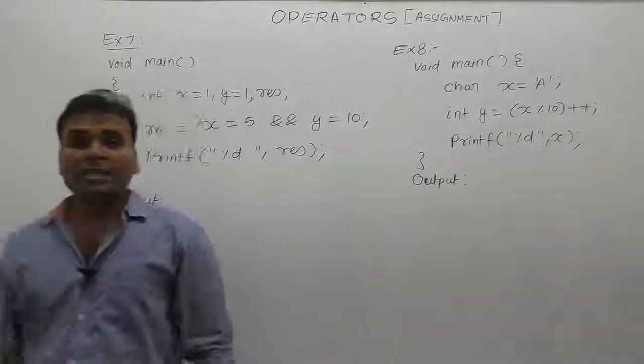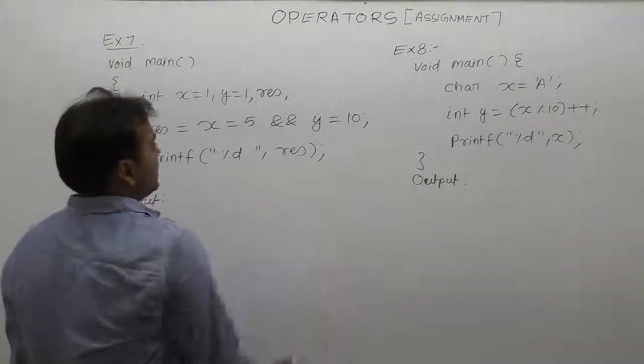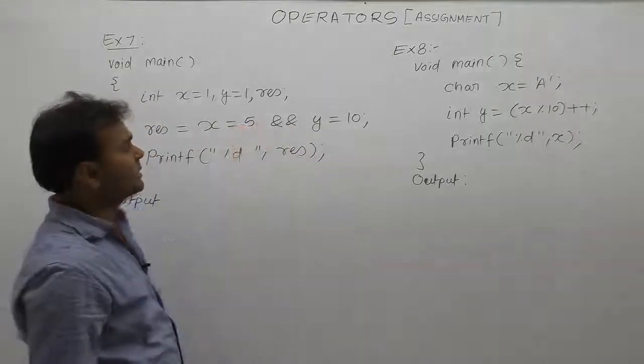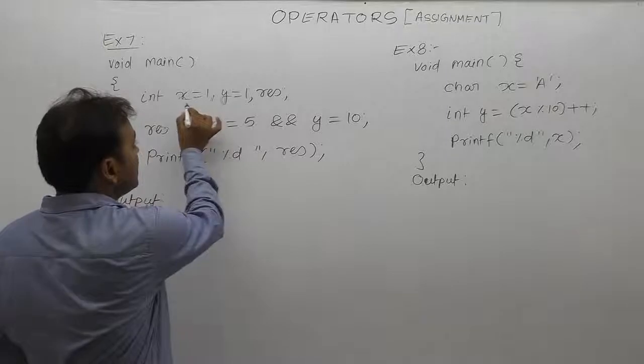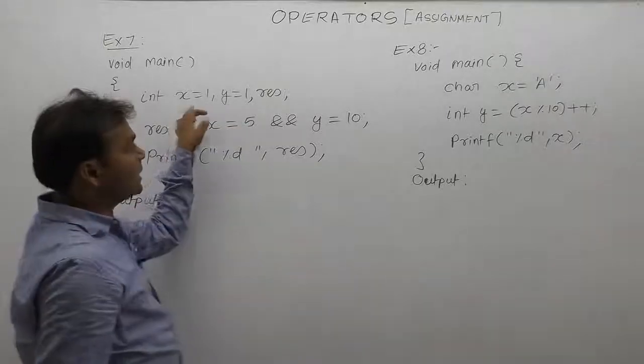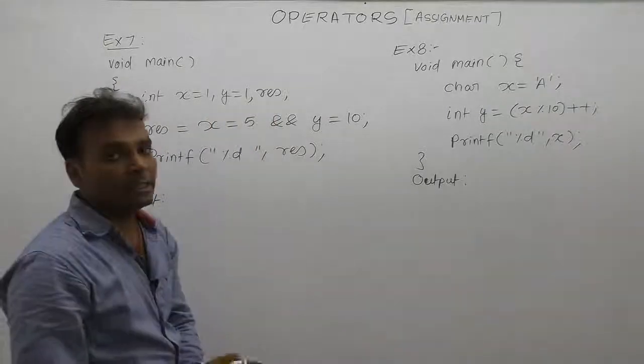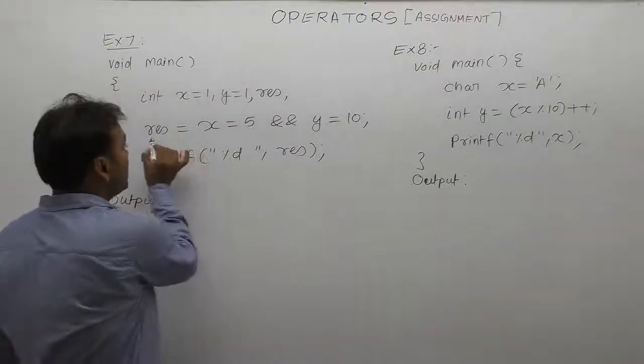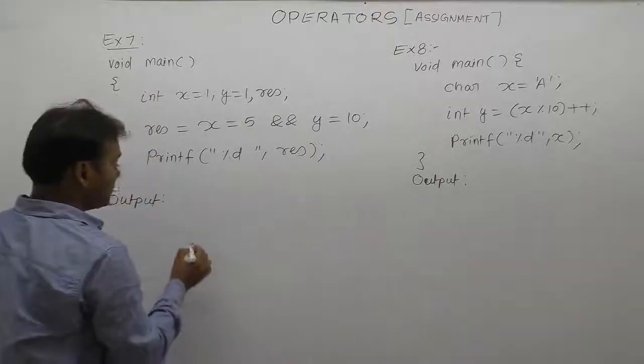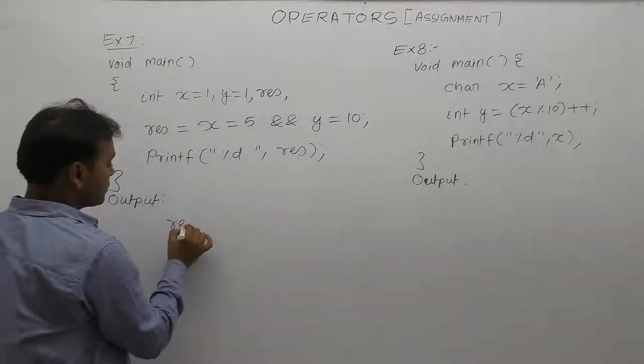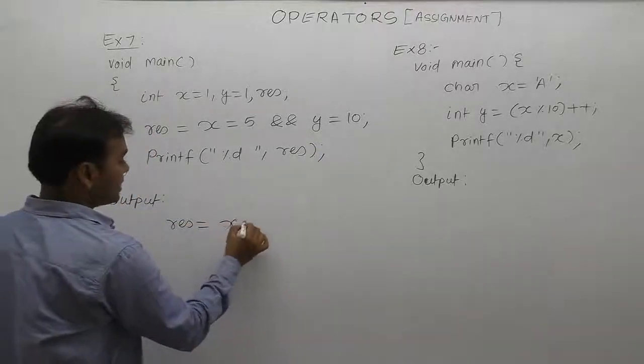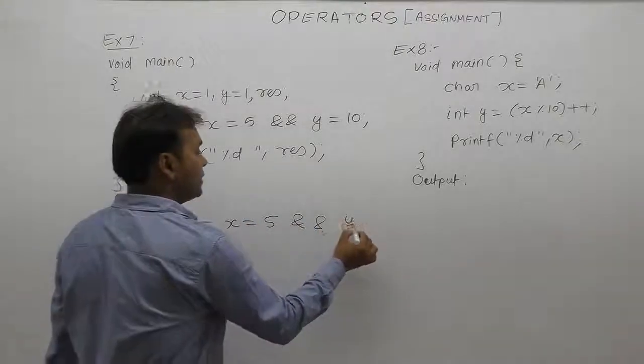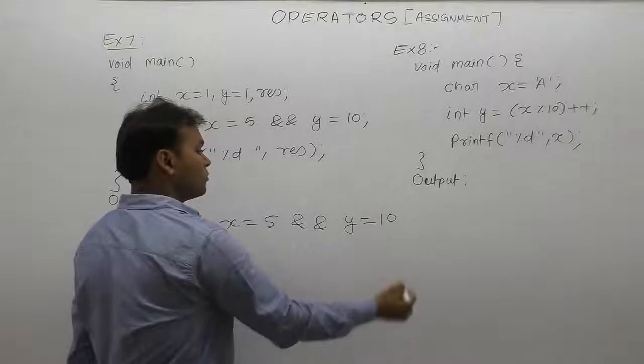Now the next interesting example is Example 7. In this case, the interesting part is the expressions. We are declaring three variables x, y, and result. The initial value of x and y is 1, and result is garbage. Then how to solve the expression: result equals to x equals to 5 and y equals to 10?